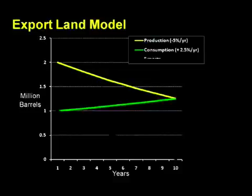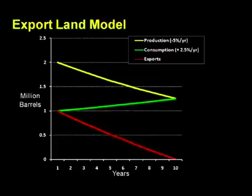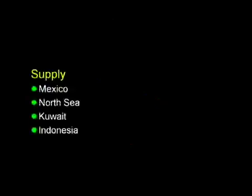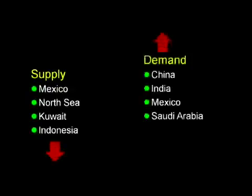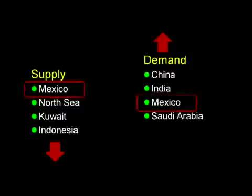What happens to exports under this model? They go to zero in 10 years. Where we expected exports, we get nothing. This is the miracle of compounding, but in reverse, where exports are eaten into from both ends. It turns out that this is a very realistic scenario because we can already observe that production is declining even as demand is increasing in a number of countries. In the case of Mexico — currently the number 3 supplier of oil exports to the U.S. — production declines and demand growth will entirely eliminate their exports by the year 2011 or 2012. Now where in the world is the U.S. going to find a brand new number 3 oil supplier in the next 3-4 years?